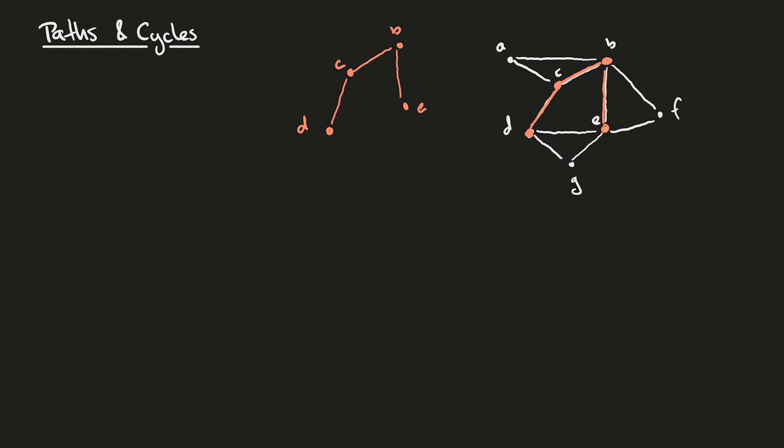We'll call this subgraph P. Now the vertices of P are D, C, B, and E. And the edges of P are DC, CB, and BE.